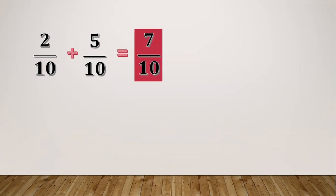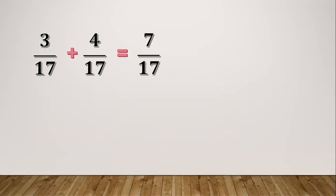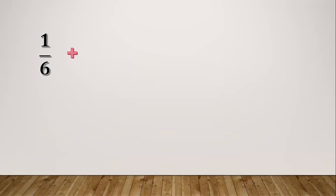Another example: three seventeenths plus four seventeenths. Same process again — add the numerators: three plus four equals seven. Copy the denominator which is seventeen, so our final answer is seven seventeenths.